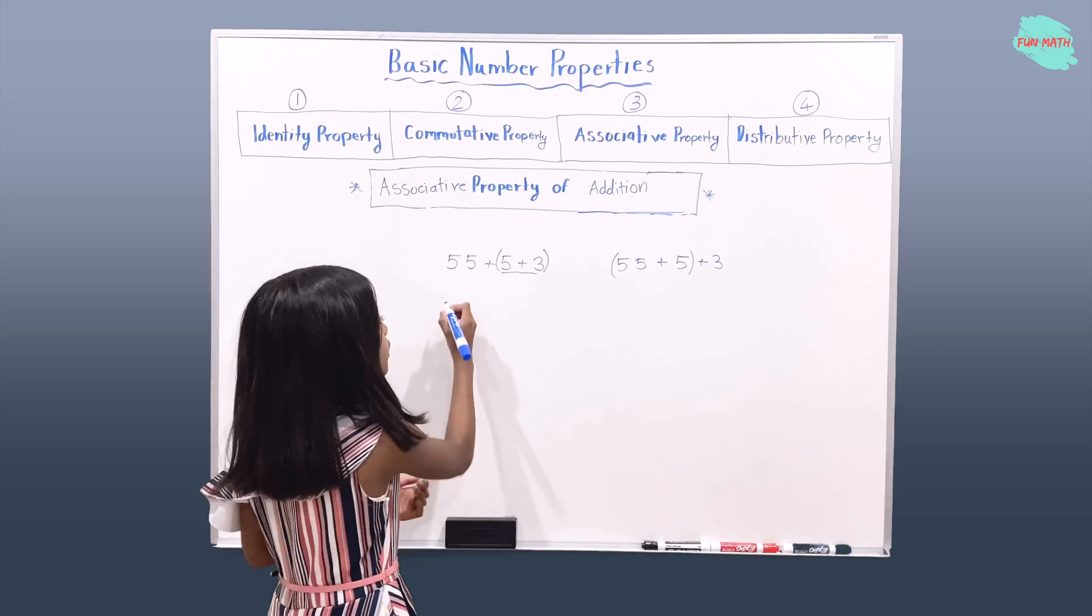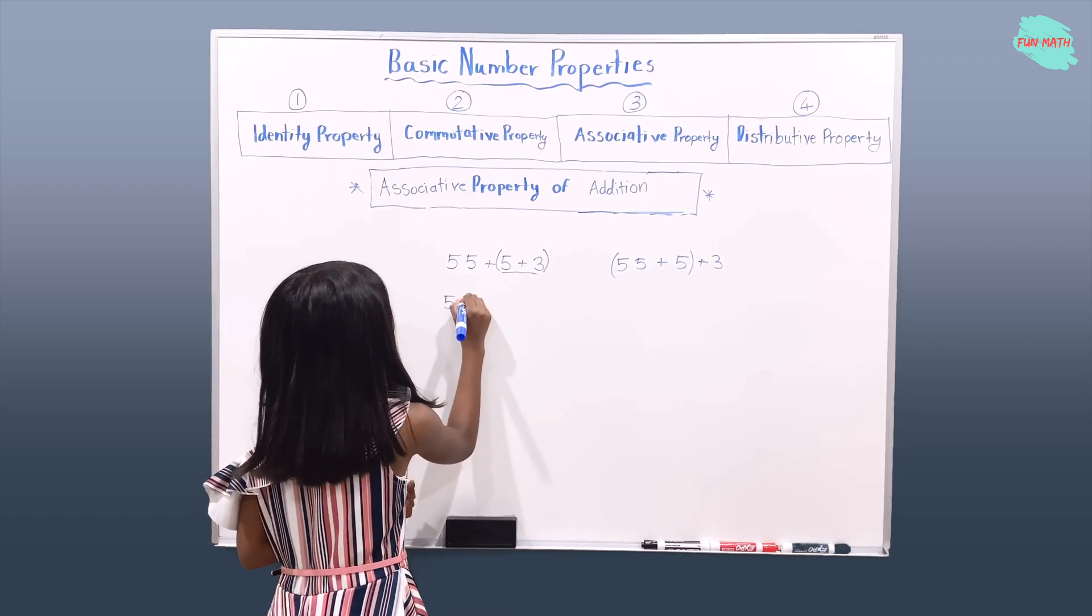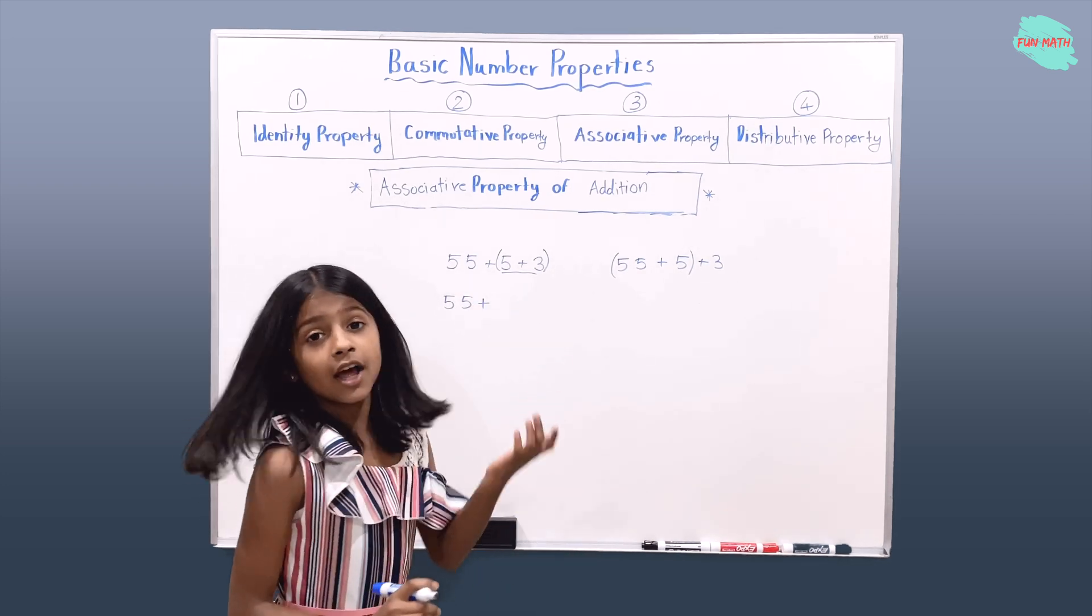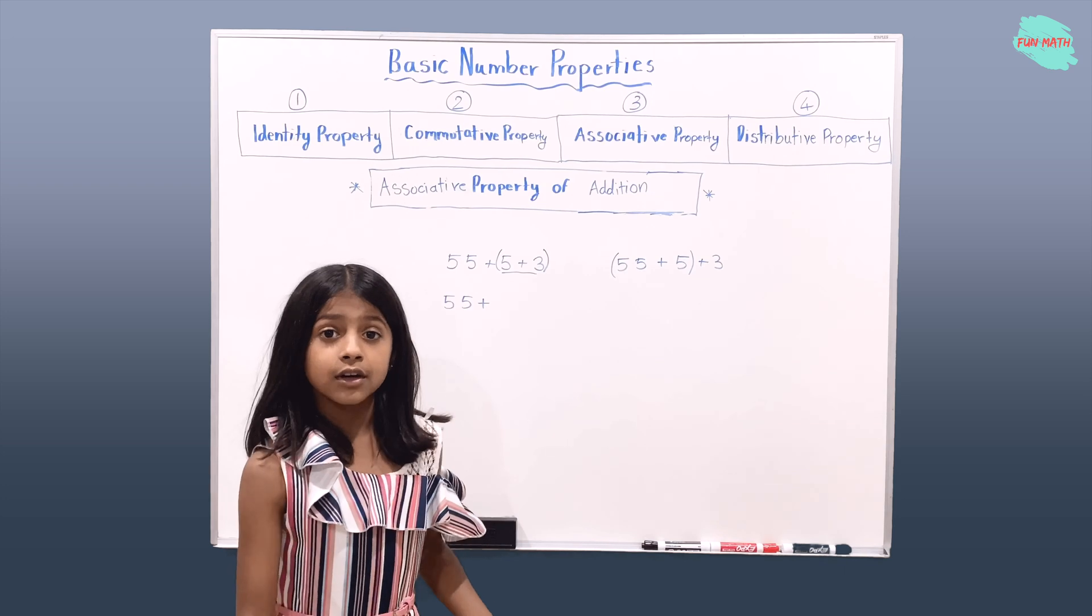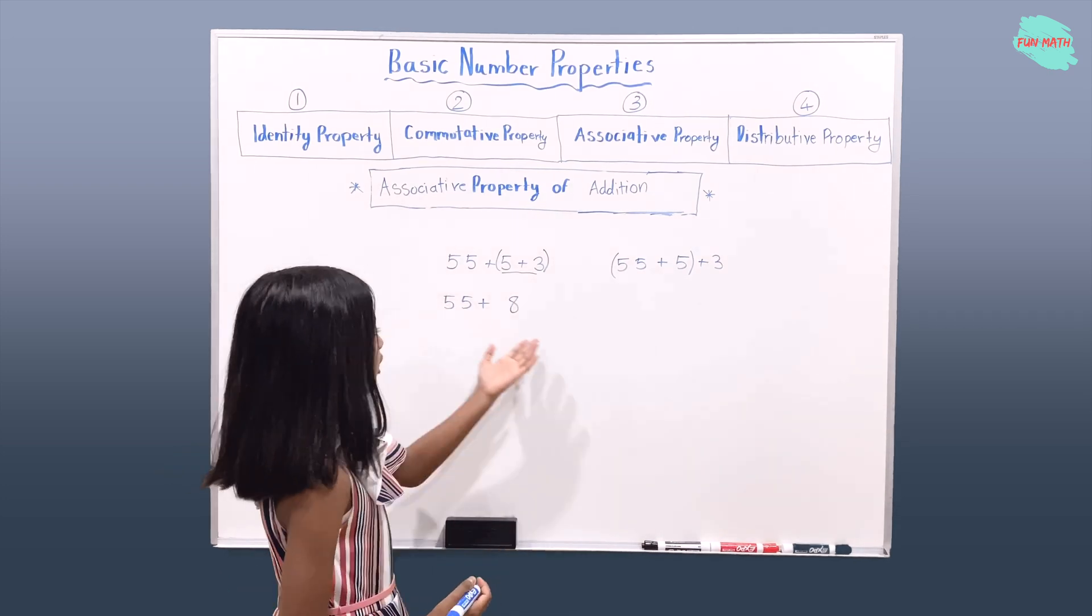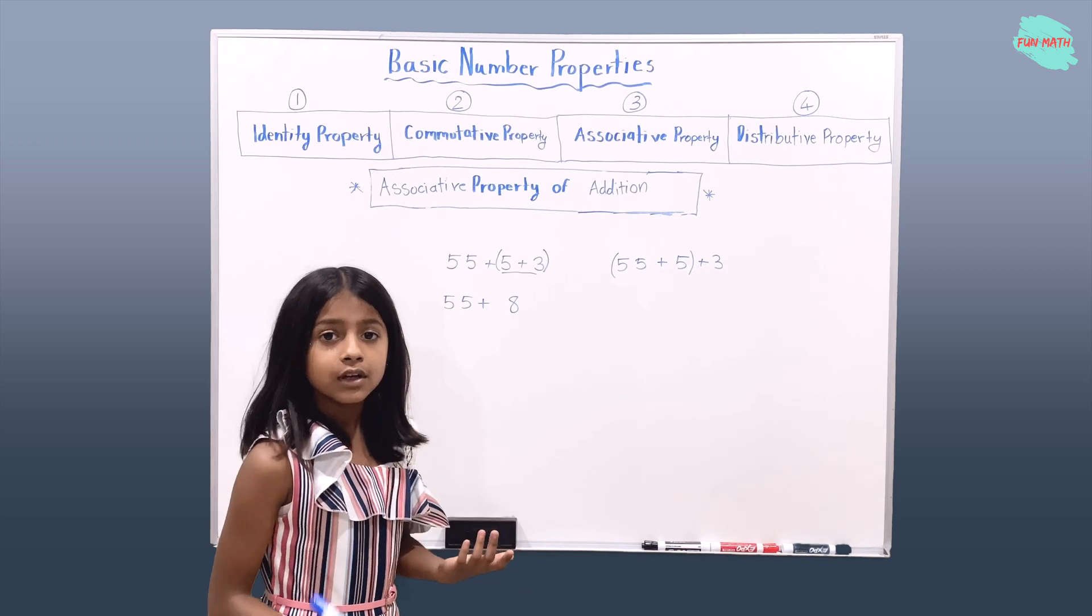So we're going to add 55 as it is and plus sign. And if you add 5 and 3, which will give you 8. What will it get you? 55 plus 8 will give you 63.